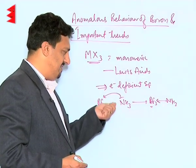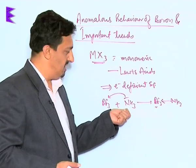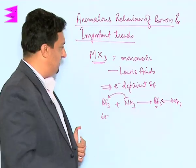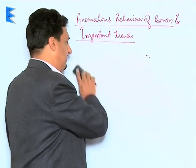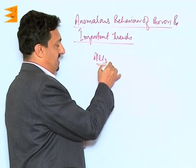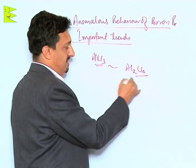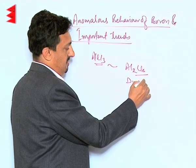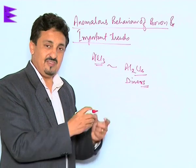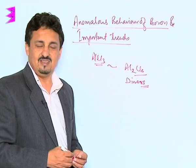This is a Lewis acid-base reaction in which BF₃ accepts the pair of electrons. We also find that halides of other elements — for example, AlCl₃ — are able to exist in the solid state in the form of dimers, with halides acting as bridging elements between the two molecular units. This is how they exist in their solid state.